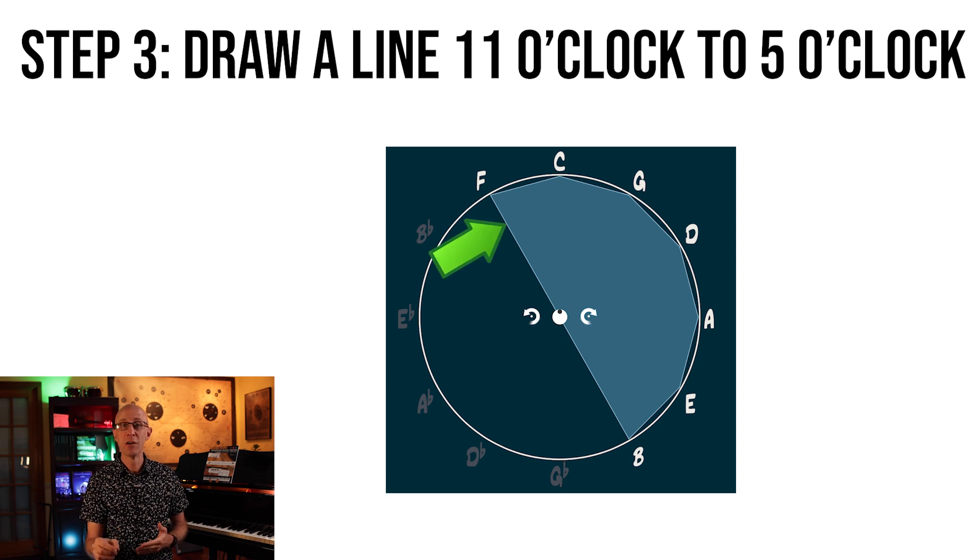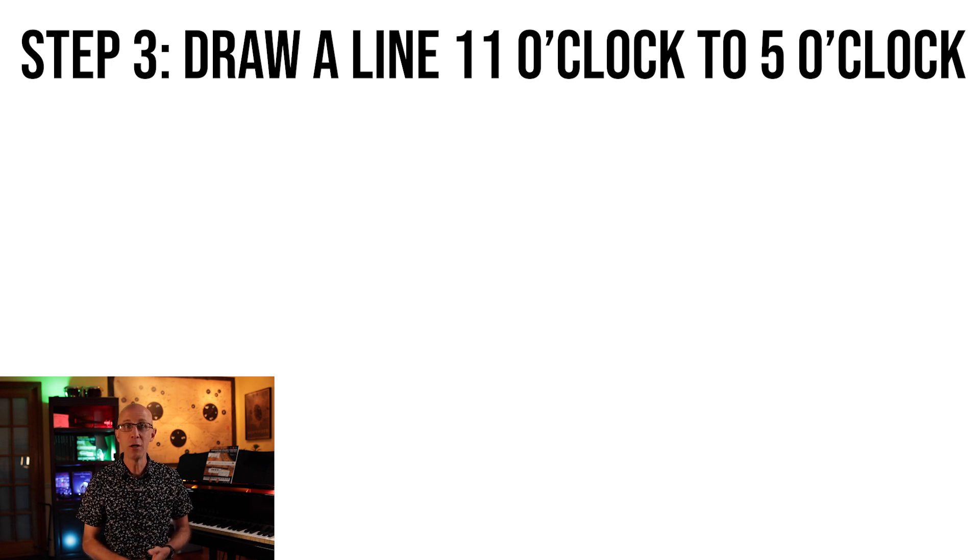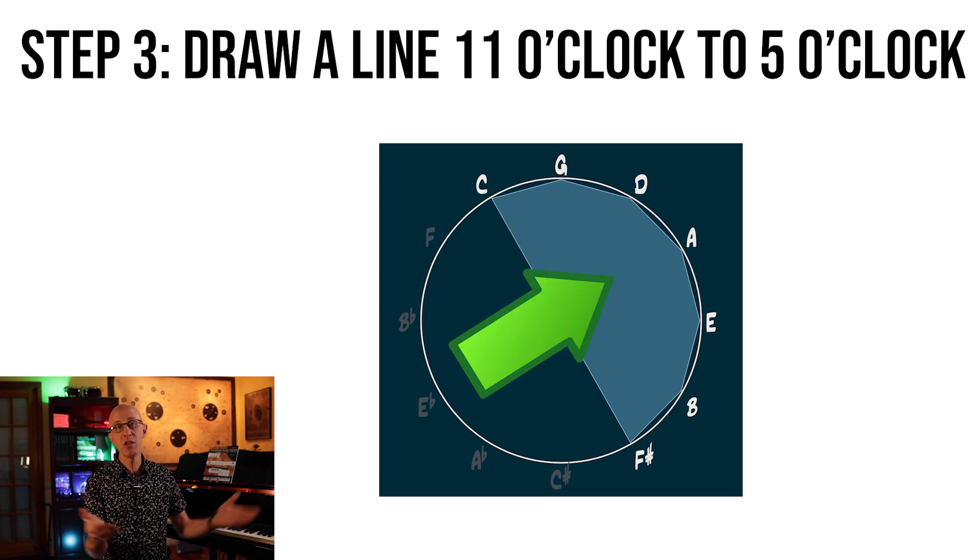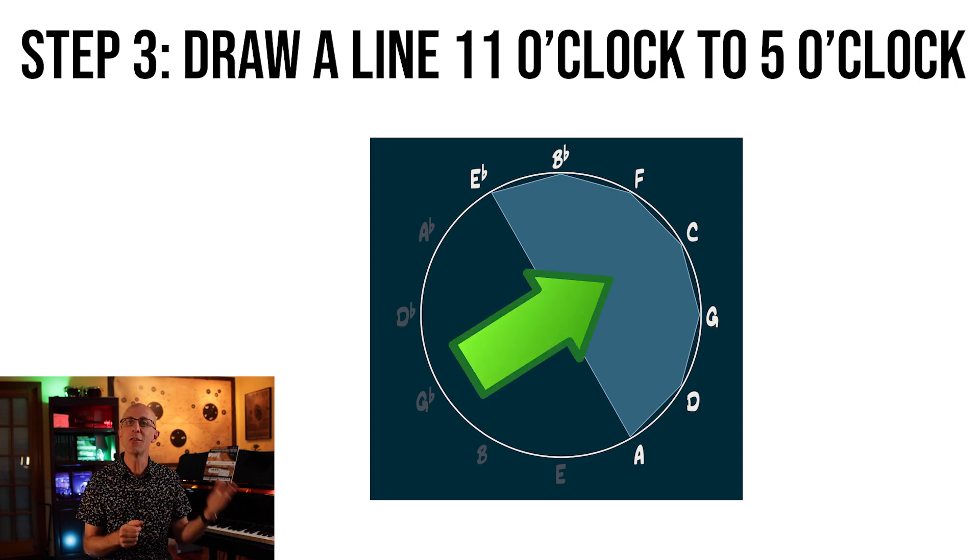Step 3: Draw a straight line from the 11 o'clock position across the circle to the 5 o'clock position. All the notes to the right are the diatonic notes. These are the notes of your major scale in that key. So this circle is in the key of C, and these notes are in the C major scale. Here's the circle in G major, so these are the notes in the G major scale. Just make sure to use the correct accidentals. Don't mix flats with sharps.